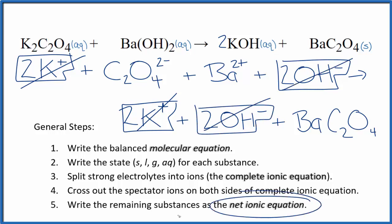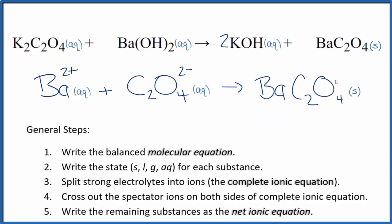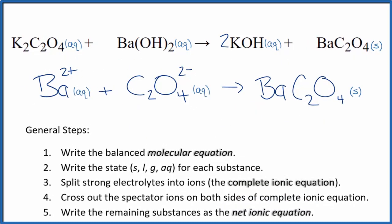What's left, that's the net ionic equation for K2C2O4 plus Ba(OH)2. I'll clean it up, write the states. We'll have our net ionic equation.